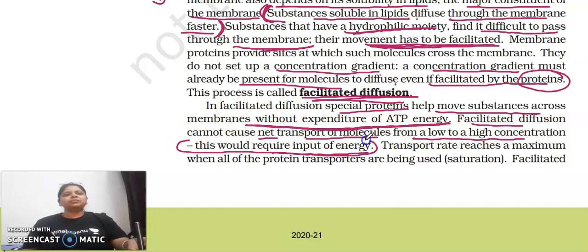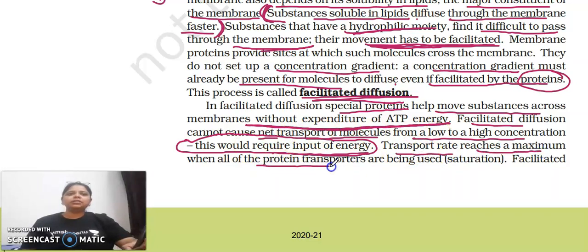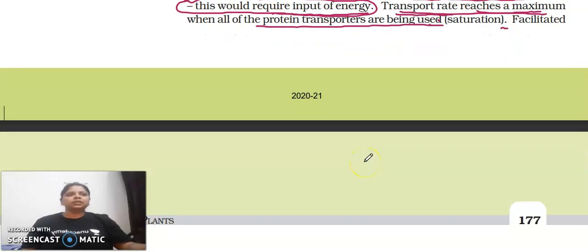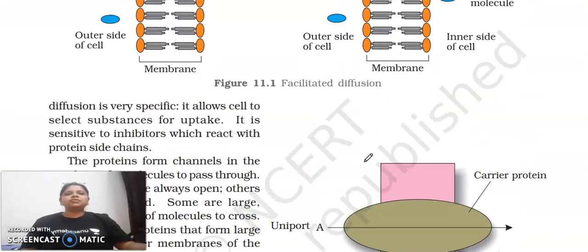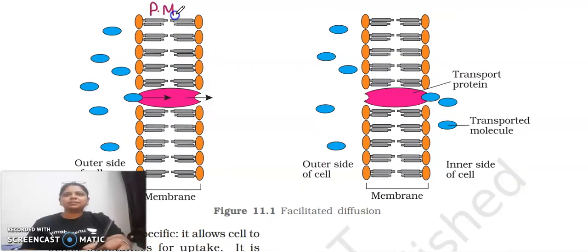Students often ask whether energy is required — since there is no net transport of molecules from lower to higher concentration, no energy is required. The transport rate reaches a maximum when the protein transporters are being fully used. This figure shows facilitated diffusion: the plasma membrane is visible, with molecules diffusing from outside into the cell.